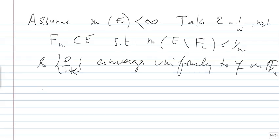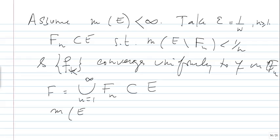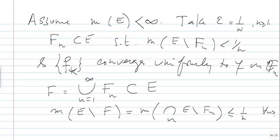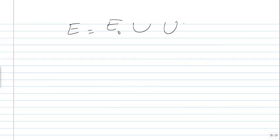Let F be the union of all the F_N's, which is a subset of E. The measure of E minus F equals the measure of the intersection of (E minus F_N), which is less than or equal to the measure of E minus F_N, which is 1/N for every N greater than 1. This implies the measure of E minus F equals zero. So E equals E_0 union the union of F_N's, where the measure of E_0 is zero and F_k converges uniformly to F on each closed subset F_N.